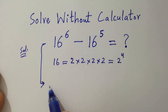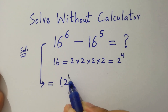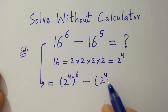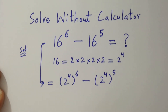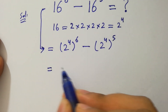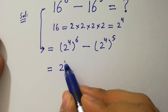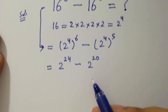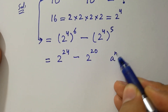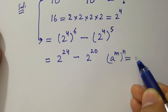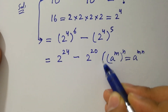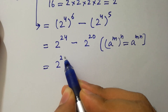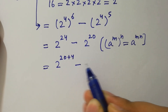Then it can be written as (2^4)^6 minus (2^4)^5, which gives 2^24 minus 2^20. Since a^m raised to the power n equals a^(m×n), and 2^24 is the same as 2^(20+4).